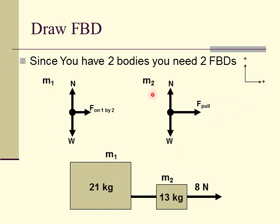This is a typical mistake that most people make when they draw free-body diagrams. For the second mass, they'll get the normal force and the weight, and they say the pull force of 8 Newtons forward. Then for the first mass, they say the rope is pulling it forward, with normal force and weight. But we're actually missing a force here. A lot of people think that this is 8 Newtons and therefore this is also 8 Newtons, and they're both being pulled forward with 8 Newtons. This is incorrect. Remember Newton's Third Law — if one object pulls on another, the other object will pull back.